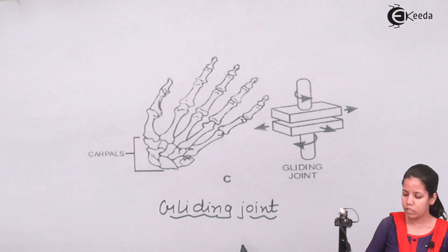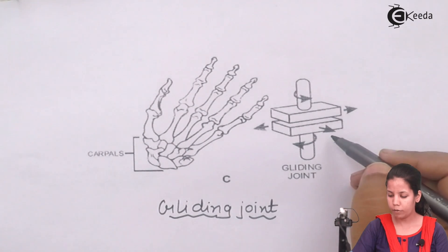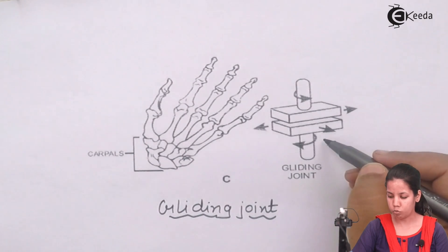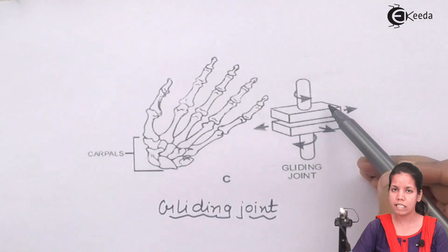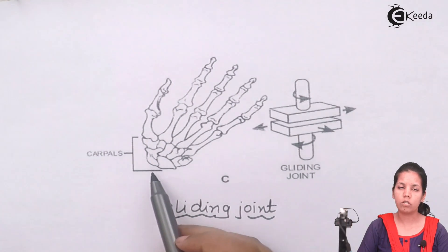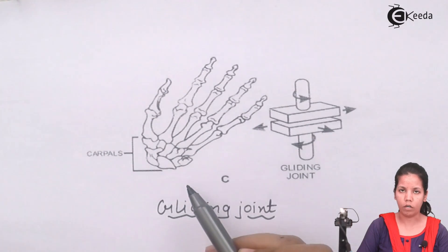This diagram represents the movement of gliding. The lower part represents one region of the bone and the upper part represents another region of the bone that simply slides or glides. Your carpal regions in your hands are the regions where gliding is basically present, and whenever you do such movements the gliding joints work and coordinate in that particular order.